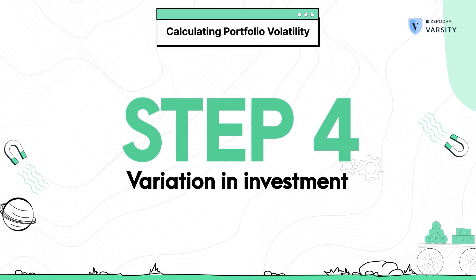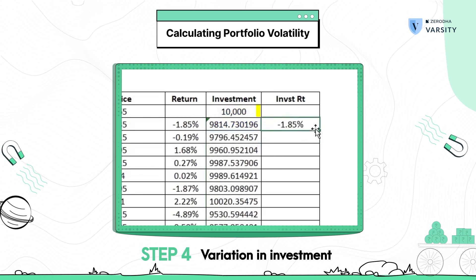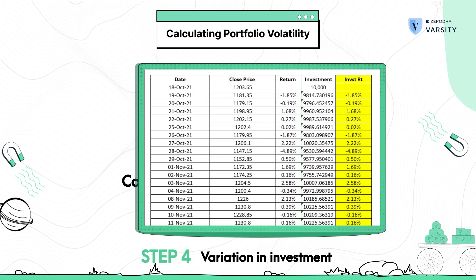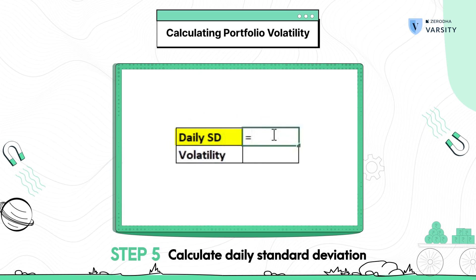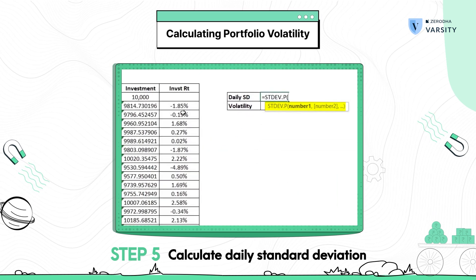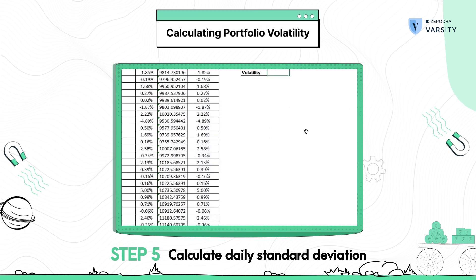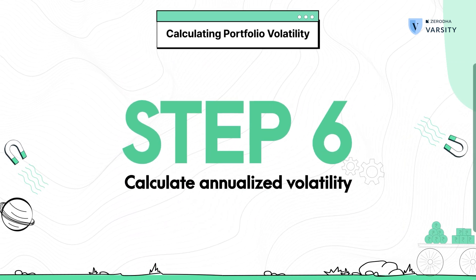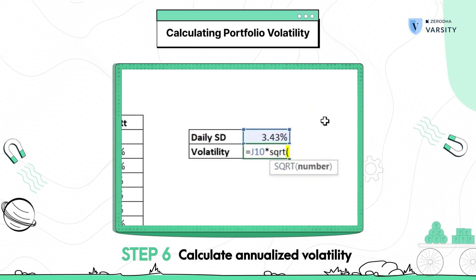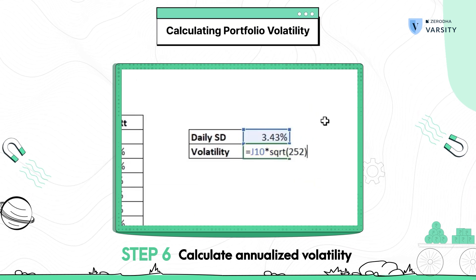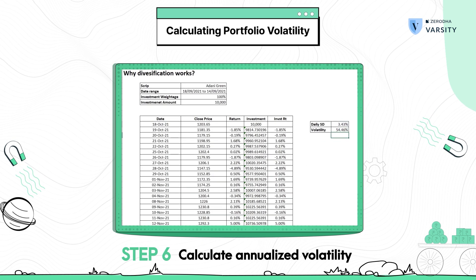Step 4: observe how the investment itself varies. Step 5: apply the standard deviation function on the investment returns to calculate the standard deviation — this gives you the daily standard deviation of your investment. Step 6: scale the daily standard deviation to a yearly standard deviation by multiplying it with the square root of time, in this case 252, as a year is considered to have 252 trading sessions.